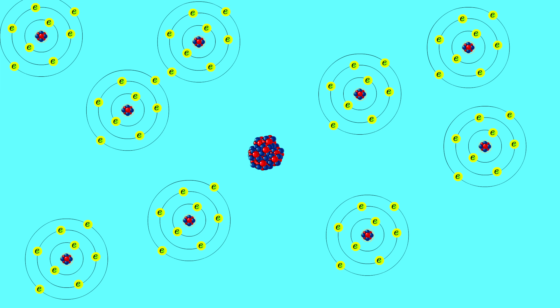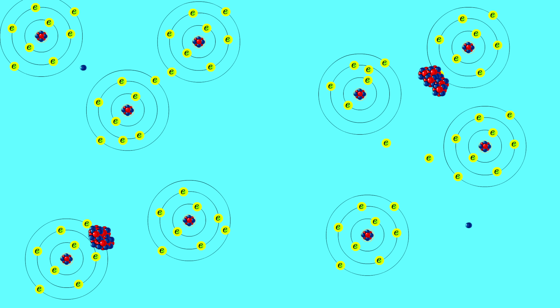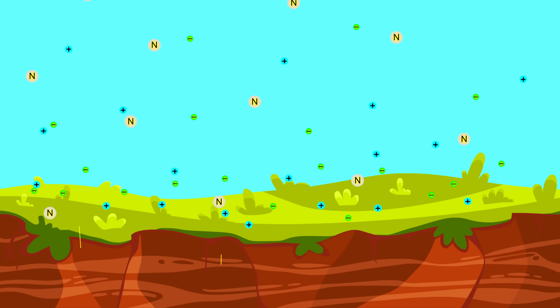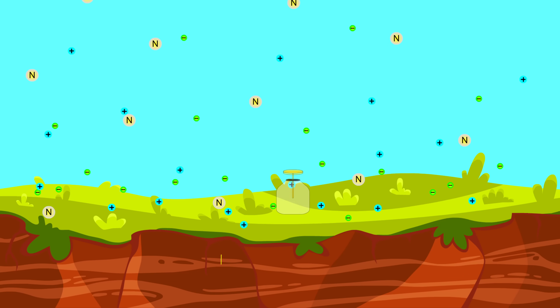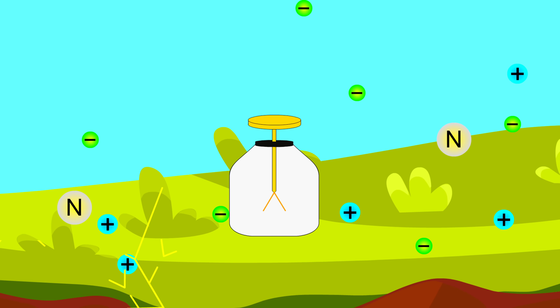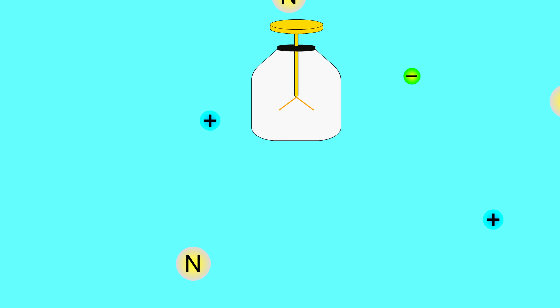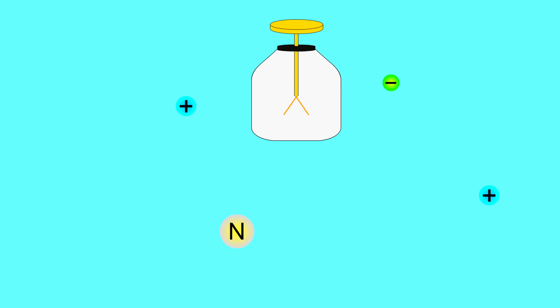Becquerel discovered that certain elements like uranium can decay, emitting particles that can ionize the air. Since these elements are in the ground, it was expected that the ionization of the air would be much greater closer to the ground. Therefore the electroscope should discharge much more quickly near the ground and very slowly above it, as the air ionization should decrease with altitude.